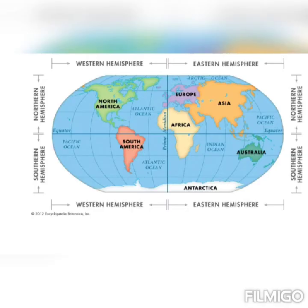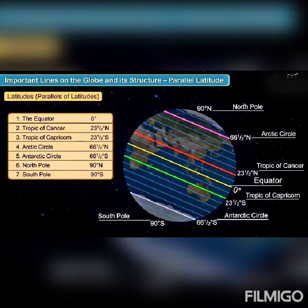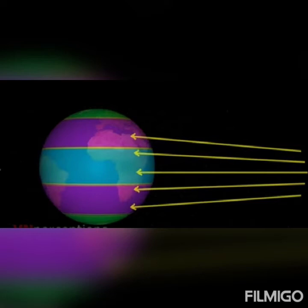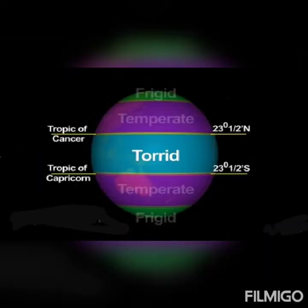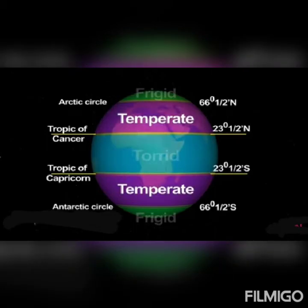The parallels of latitude divide the earth into various heat zones. Different zones have different types of climate and vegetation. The first zone is the Torrid Zone, which means hot — very, very hot. This zone is the hottest zone and lies between the Tropic of Cancer and the Tropic of Capricorn.